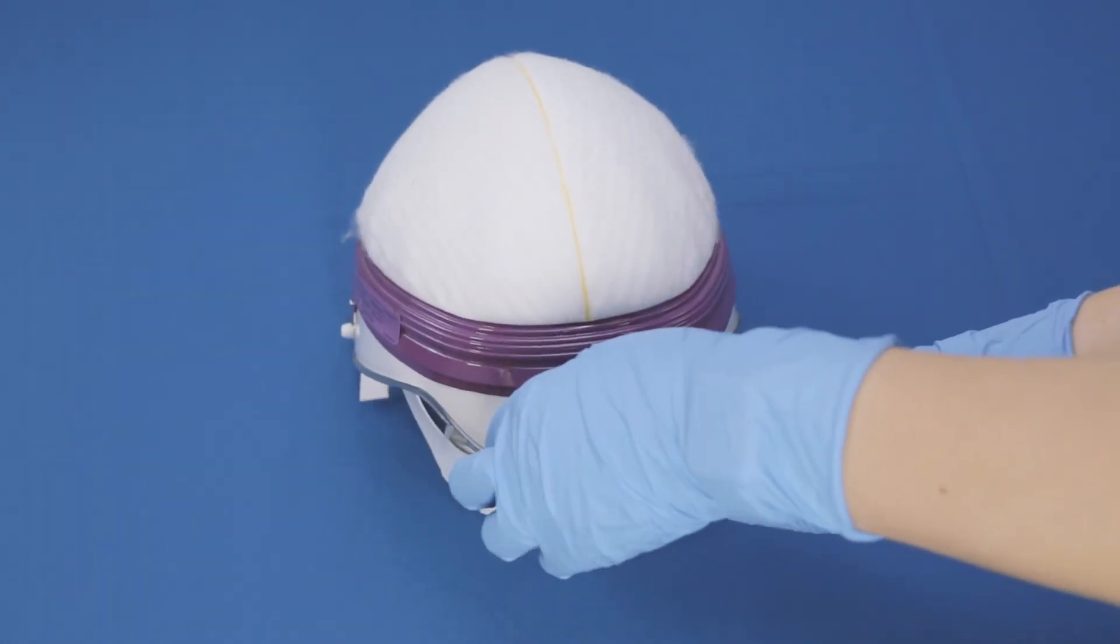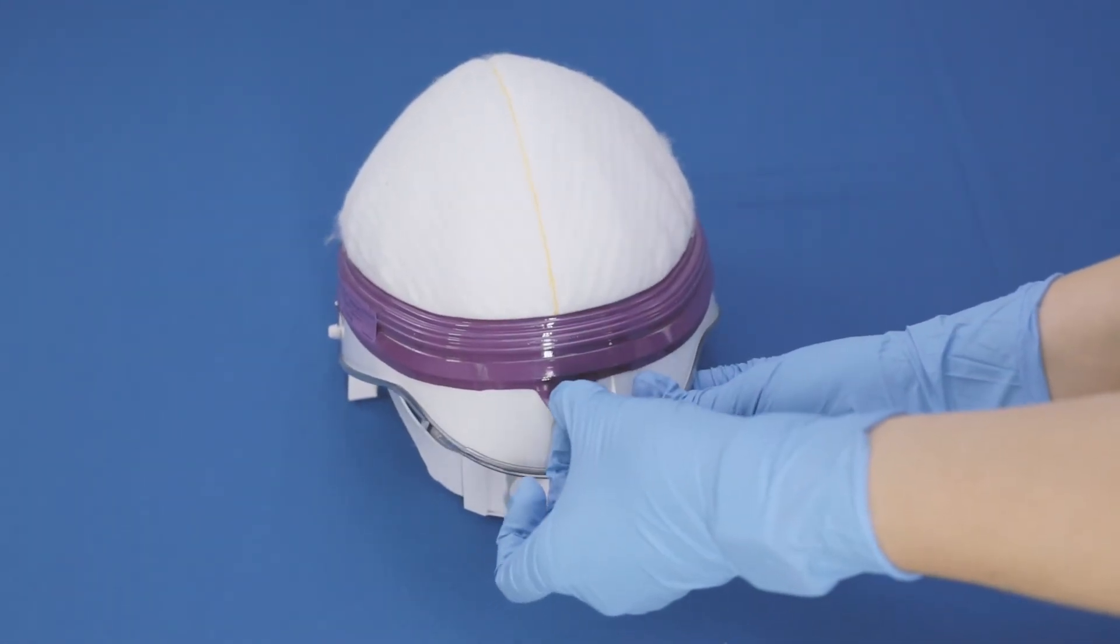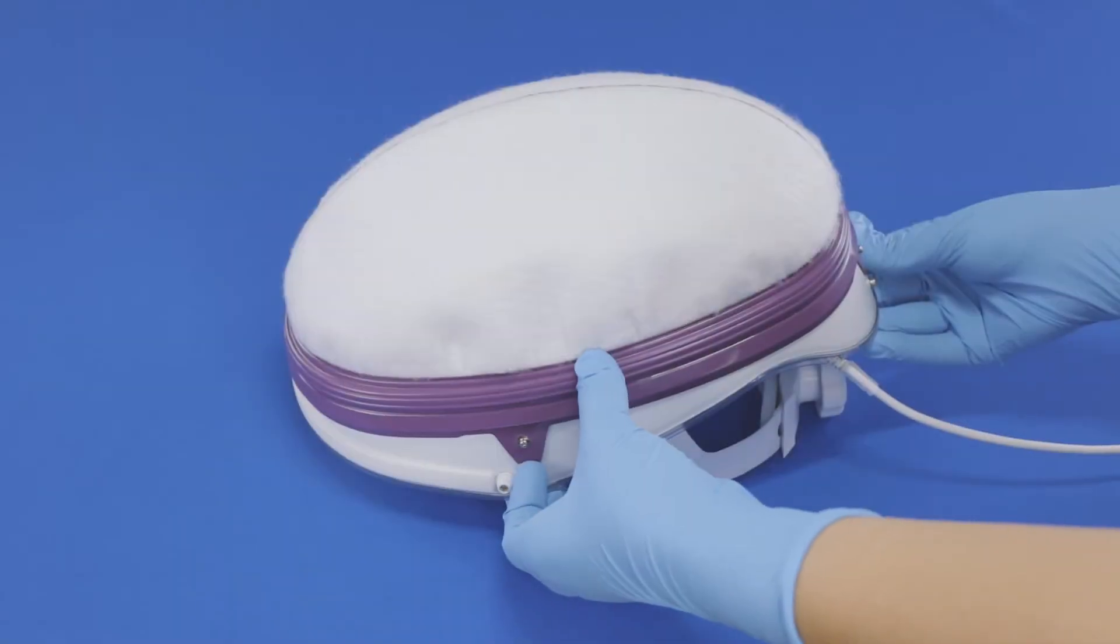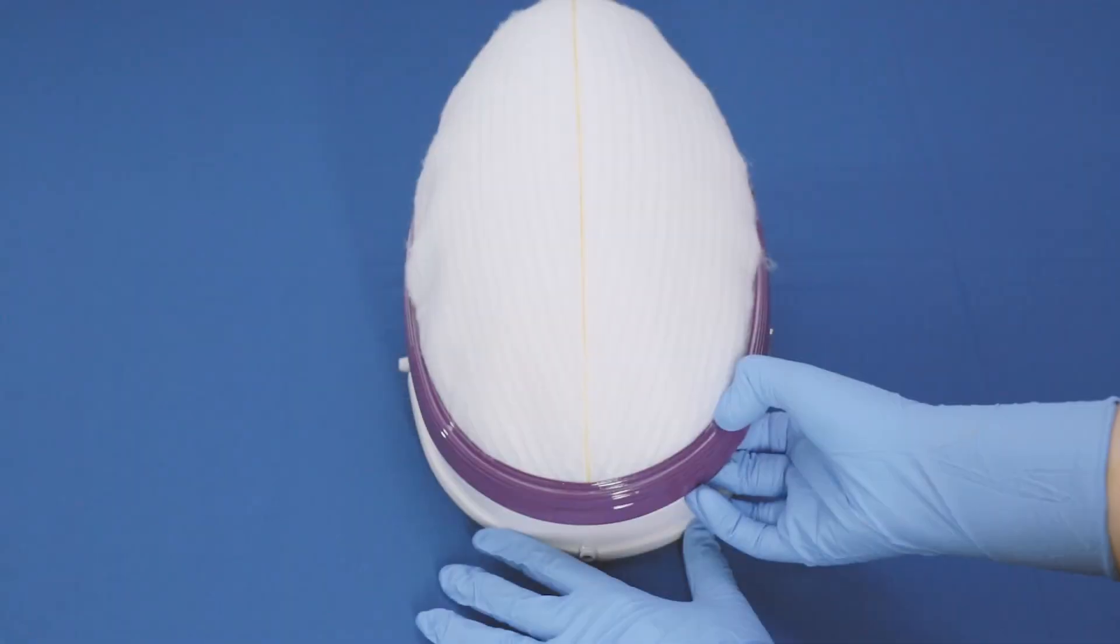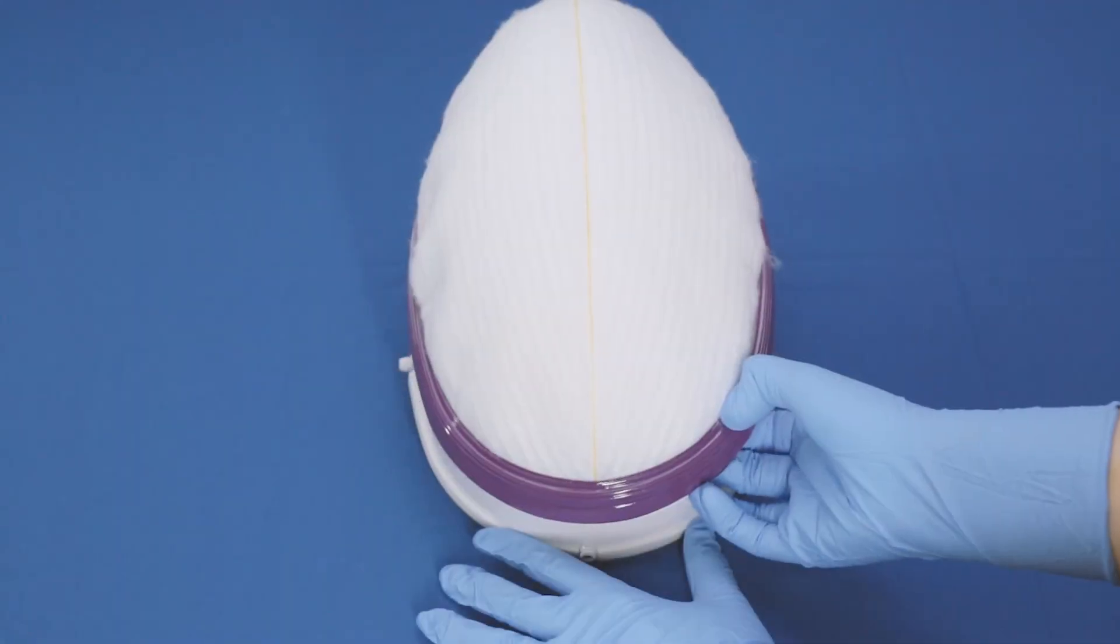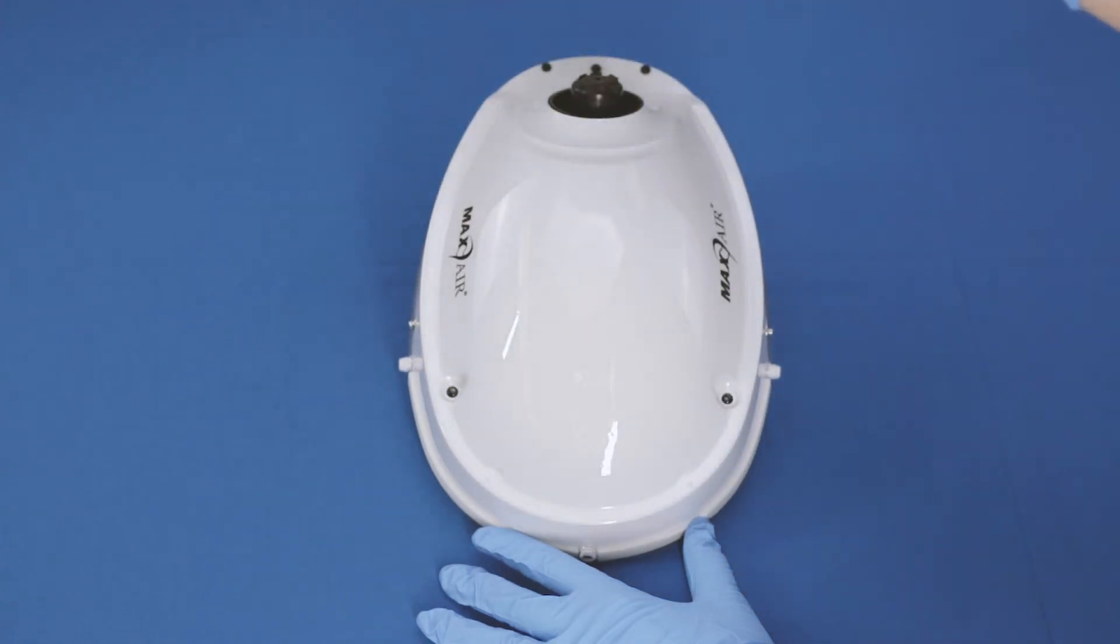To disassemble a filter cartridge, begin by unsnapping its magenta retainer ring rear and side tabs from the helmet. Then, while holding the helmet firmly, typically lift under the front of the retainer ring. Continue lifting the filter cartridge until it is completely away from the helmet.